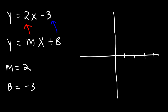The first thing we're going to plot is the y-intercept — that's where the graph touches the y-axis. We have a y-intercept of negative 3, so here's negative 3 on the y-axis.